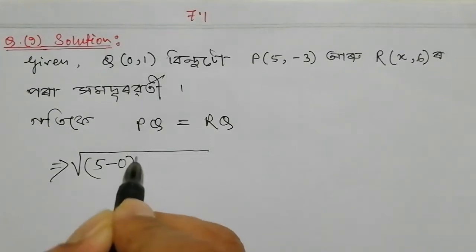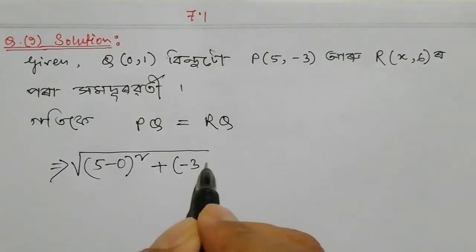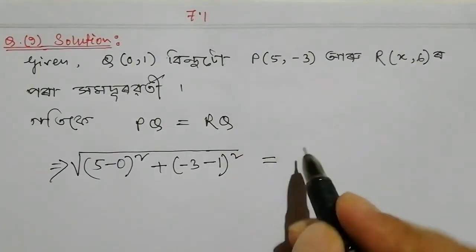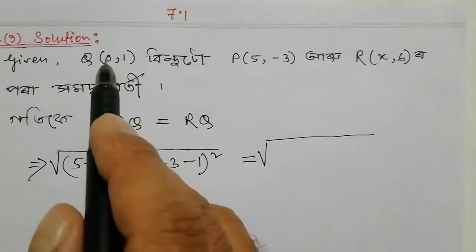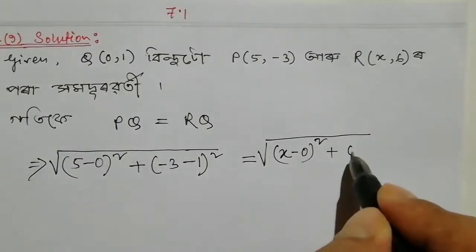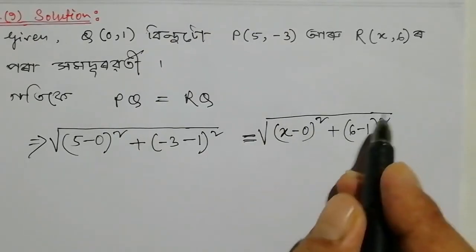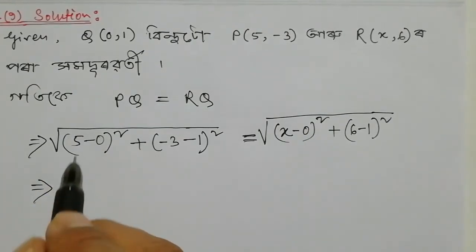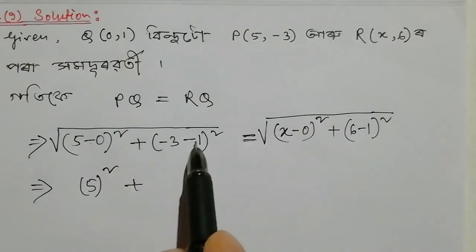x1 minus x2 whole square plus y1 minus y2 whole square. So from the coordinates: 7 minus 0, to 2 minus 0. Then the value gives us 6 minus 1 whole square, and we remove terms. So 5 cancel, square 2 plus 4.